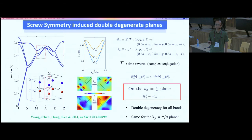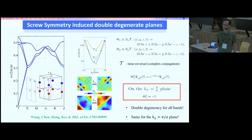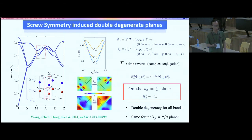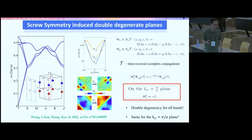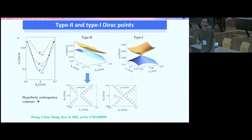With this symmetry-enforced degeneracy, every band along the AM line (kx = ky = π/a) is actually two photonic bands. The field profiles show that the d1 and d2 orbitals are degenerate — related to each other by S_x and S_y — and similarly the p1 and p2 orbitals are degenerate. Since p and d states have opposite parities, any crossing between photonic bands of opposite parity is a three-dimensional Dirac point.